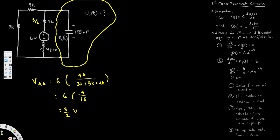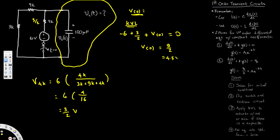Now we apply KVL to find the initial capacitor voltage v(0). Going around the loop: −6 + 3/2 + v(0) = 0. Combining: −12/2 + 3/2 = −9/2, so v(0) = 9/2 = 4.5 volts. This is our initial condition.